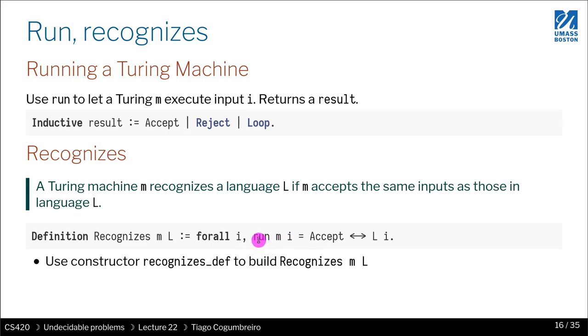What we know is that if we run for a certain Turing machine m that is given as parameter, we vary for all inputs, and we say that this machine m recognizes a certain language if all inputs that the machine accepts are also accepted by the language, and vice versa. In our proofs, we're going to see that we need to use recognizes_def to construct a proof object recognizes.